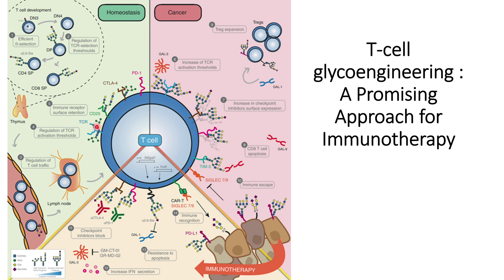T cells then go to the cell surface membrane where T cell receptors and CD25 modulate T cell activation. Glycosylation of CTLA-4 also helps in modulation — activating or deactivating T cells based on host requirements. PD-1 is also glycosylated and similarly helps in modulation of T cells along with the other receptors shown here.